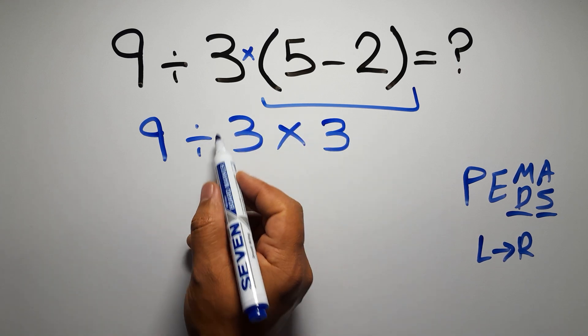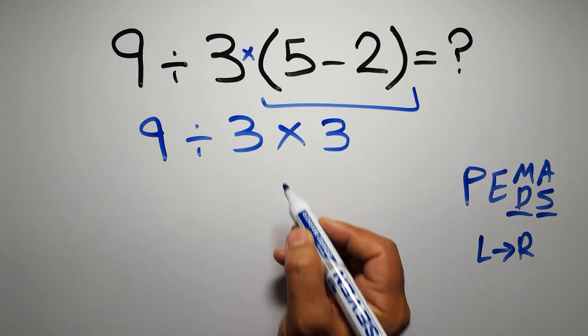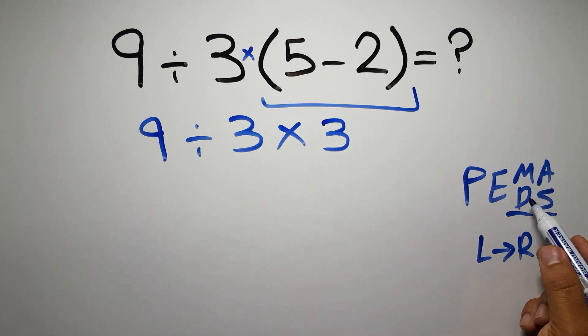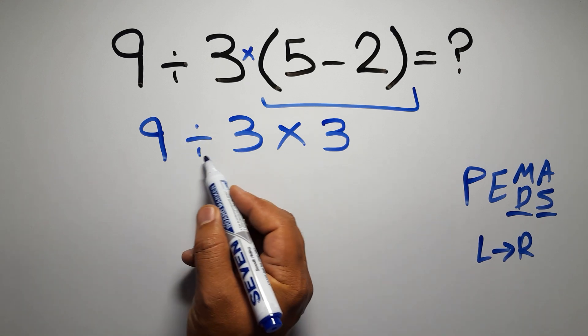Now we have one division and one multiplication. As I said, multiplication and division have equal priority, and we have to go from left to right, so here first we have to do this division.